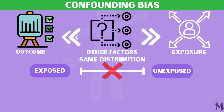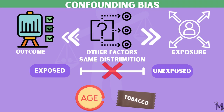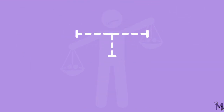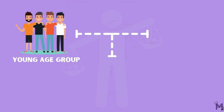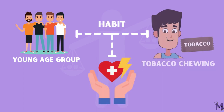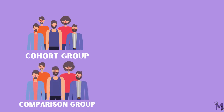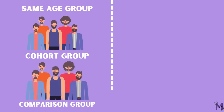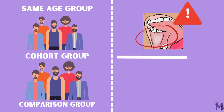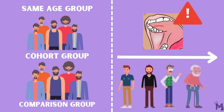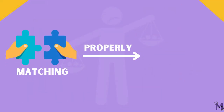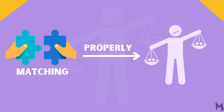Two of the most common confounding factors are age and tobacco. In cases where we have to study the effect that a younger age group of people will have on their health due to the habit of chewing tobacco, we must ensure that the cohort group and the comparison group both have people of the same age group, since the risk of oral cancer only increases with age. If matched properly among both groups, this bias can be prevented.